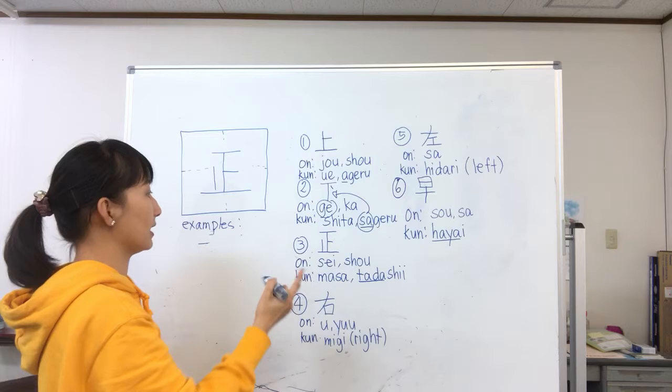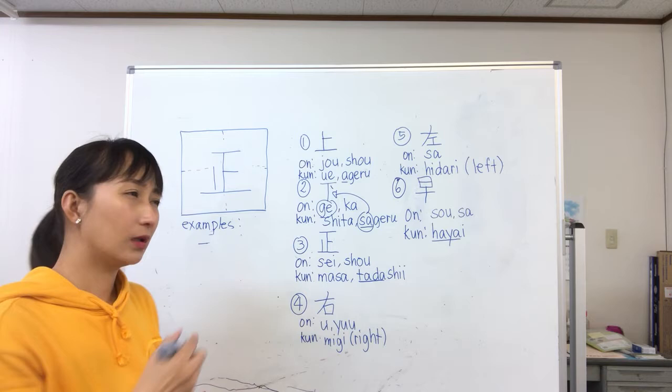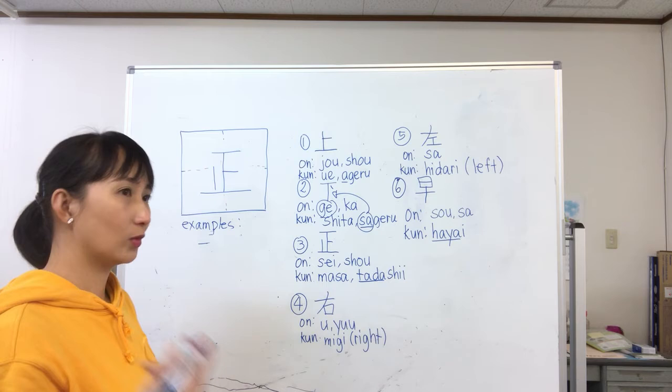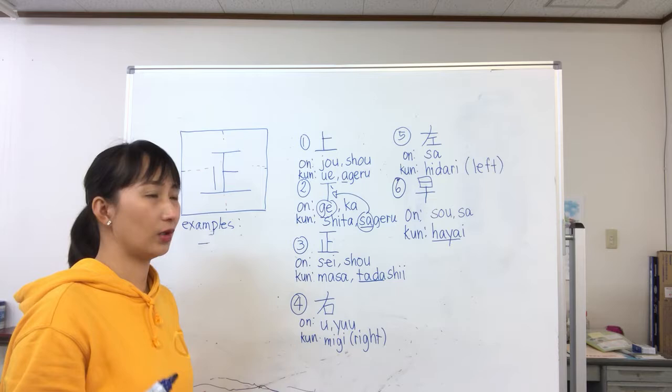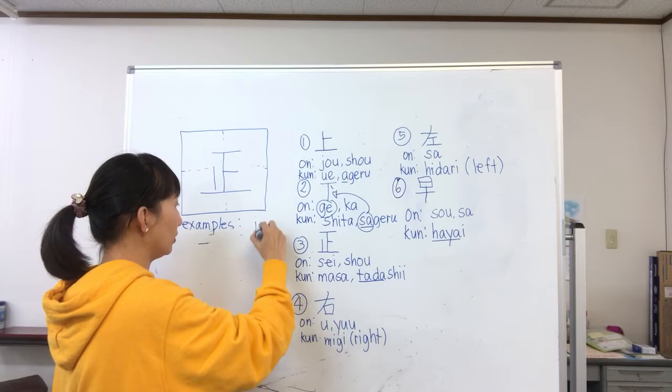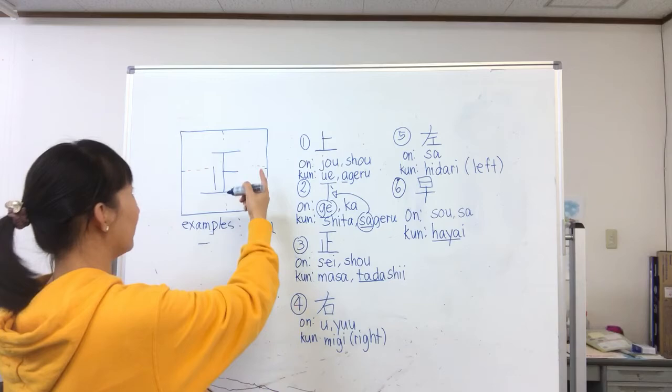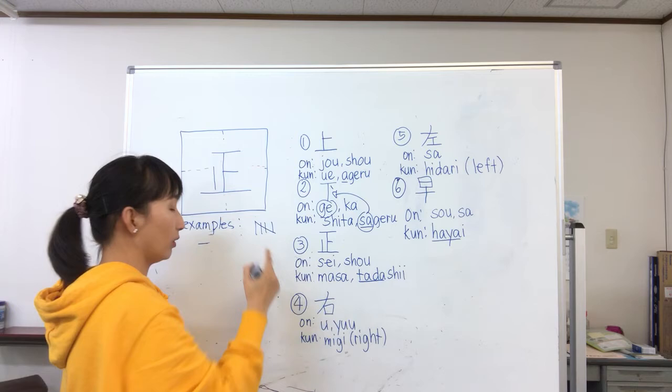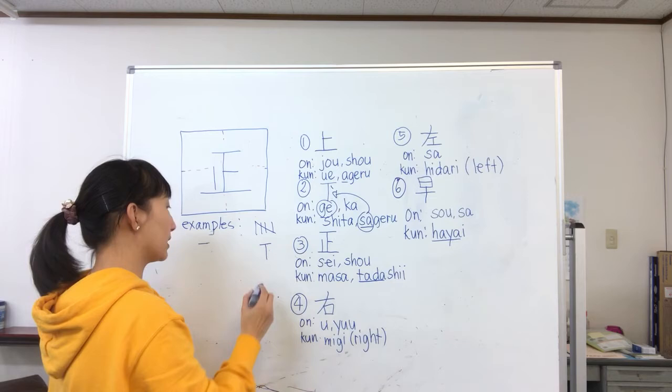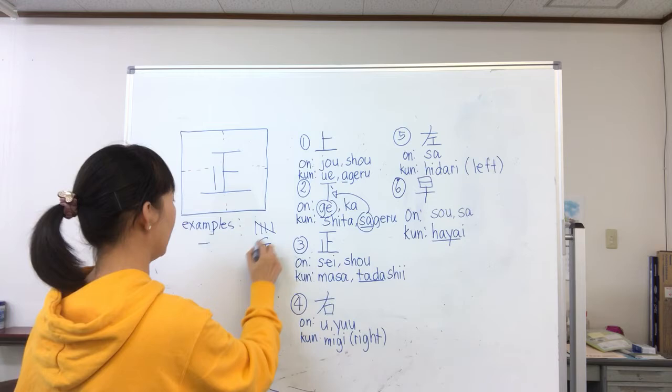In Japan, the tally or pointing system works differently. While many people write four lines and a diagonal for five points, in Japan we write it using this kanji stroke by stroke — one, two, three, four, five. That is how we write tallies in Japan.